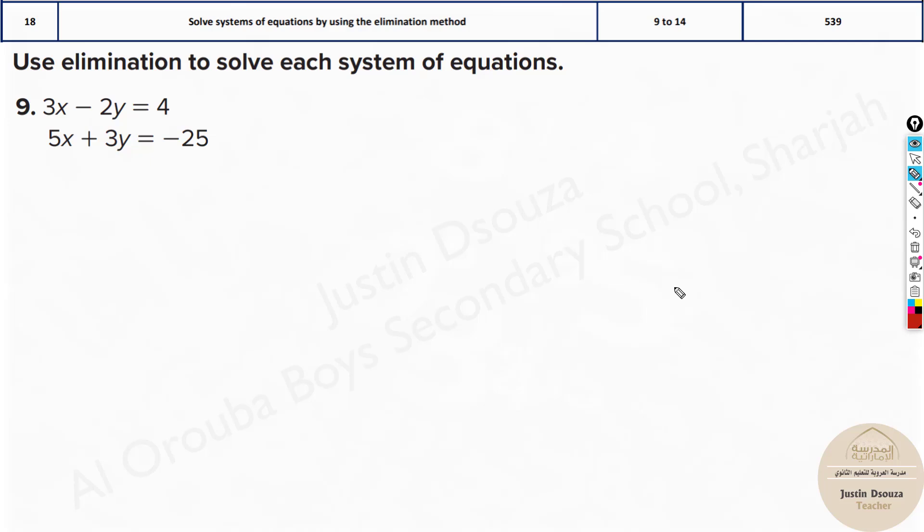Now the elimination method is about subtracting to cancel two terms and then simplify. First, look at the terms over here: 3x and below is 5x, minus 2y plus 3y. There is nothing that can easily be cancelled off, but here we have opposite signs, minus and plus, which really helps us. So leave the signs, just look into the numbers. The numbers 2 and 3 are smaller compared to 3 and 5.